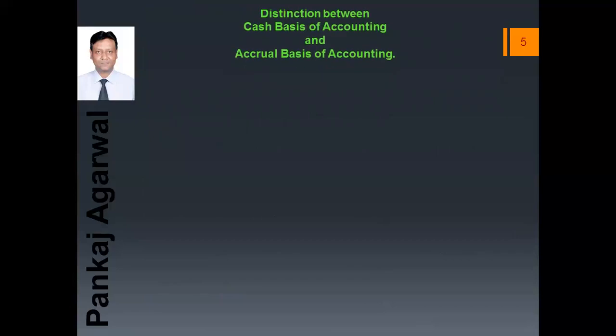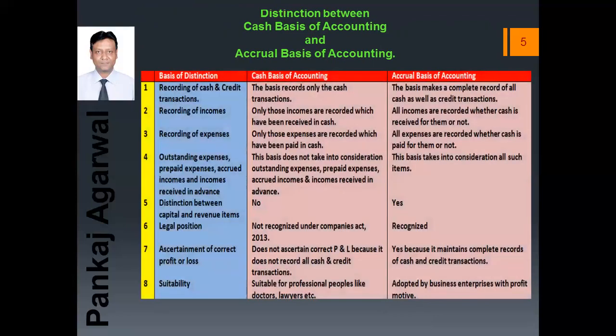Let us now look at the distinction between cash basis and accrual basis of accounting. On the first point — recording of cash and credit transactions: under cash basis of accounting, only cash transactions are recorded and credit transactions are not recorded. But in accrual basis of accounting, we record both types of transactions, either cash or credit.